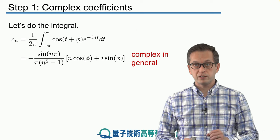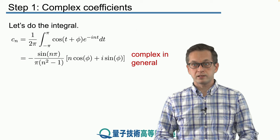So we see that when we introduce a phase shift, we turn the cn to be a complex number in general.